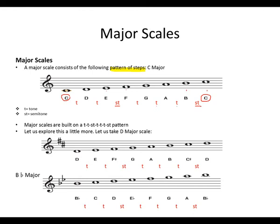Let us look at the D major scale and see if this is true. Between D and E, it's a tone. Between E and F sharp, it's a tone. Between the third degree and the fourth degree, it's a semitone. Between G and A, it's a tone. A and B, a tone. B and C sharp, a tone. And then finally, between the seventh degree and the eighth degree, it will be a semitone.